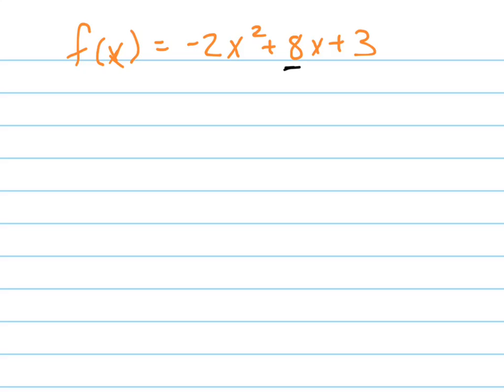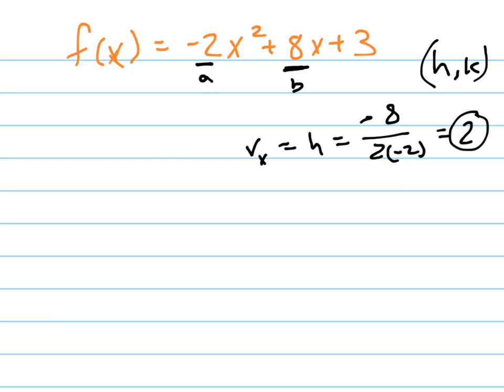Now, by the way, I can tell what my vertex is very easily by doing negative b, that's my b, over 2a, that's my a, which is positive 2. That's my x-coordinate of my vertex, or h, or v sub x. If we say h,k, that's my h.